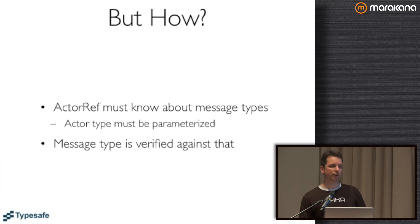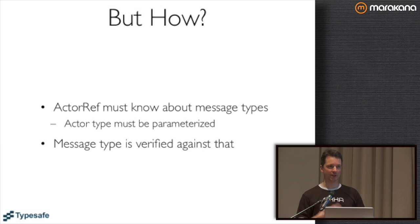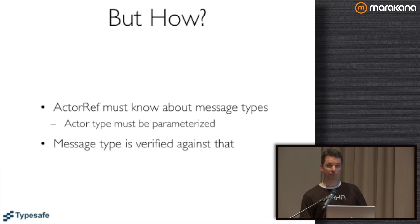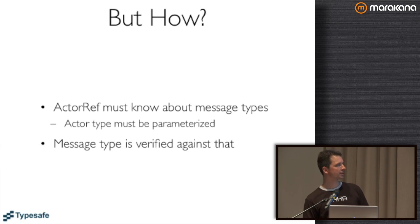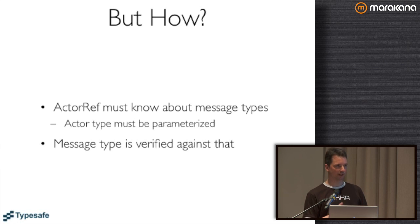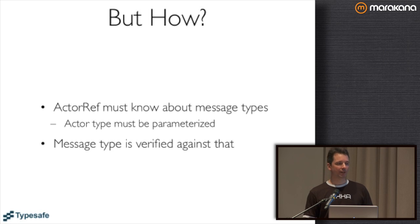What that means is that the actor ref on the left somehow needs to know which type is allowed for the message. Only then can the compiler check that the message is actually a subtype of that and that it works. So the actor refs are produced by an actor system or within an actor system using factory methods, and they use actor classes - a class implementing the actor trait as a template. In the end it must come from there - nobody else knows. So the actor must declare what its allowed input types are. When we have that, we can verify the message type against this at the call site.